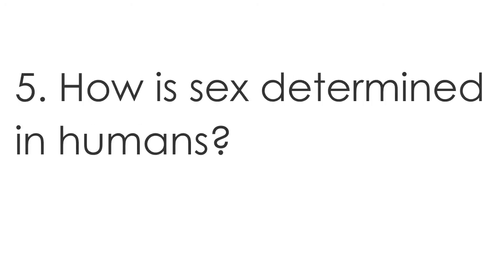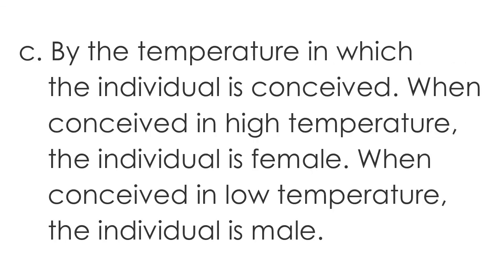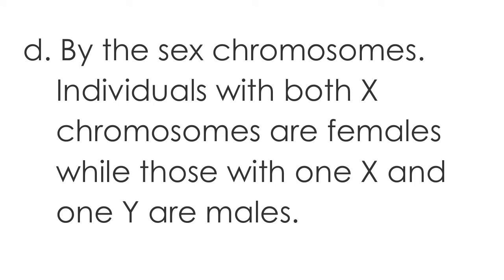Question 5: How is sex determined in humans? A. By the ratio of the autosomes to the sex chromosomes.  B. By the presence of the ZW chromosomes.  C. By the temperature in which the individual is conceived — when conceived in high temperature the individual is female, when conceived in low temperature the individual is male.  D. By the sex chromosomes — individuals with both X chromosomes are females, while those with one X and one Y are males.